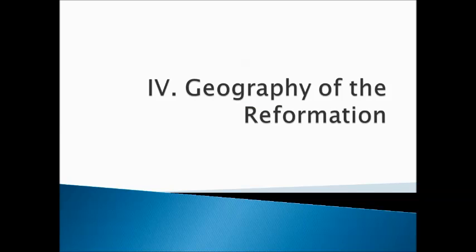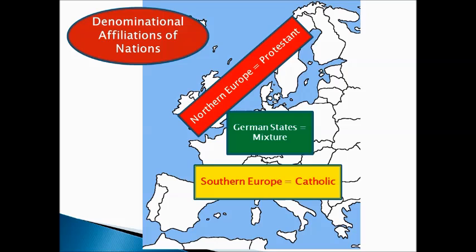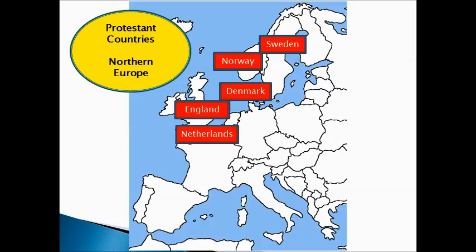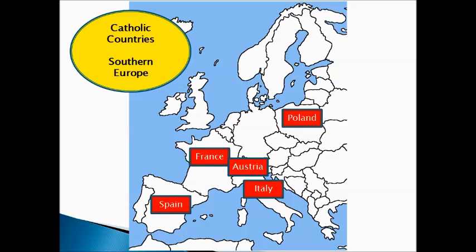What about the geography of the Reformation? We get some denominational affiliations of nations. In Northern Europe, we get Protestant countries. In the middle — the German states or the Holy Roman Empire — we get a mixture of Catholic and Protestant. In Southern Europe, we get mainly Catholic countries. Protestant countries are mainly located in Northern Europe: Sweden, Norway, Denmark, England, and the Netherlands. In the Southern part of Europe, Spain, France, Austria, Italy, and Poland are Catholic countries.